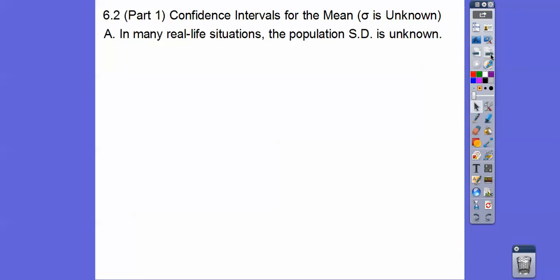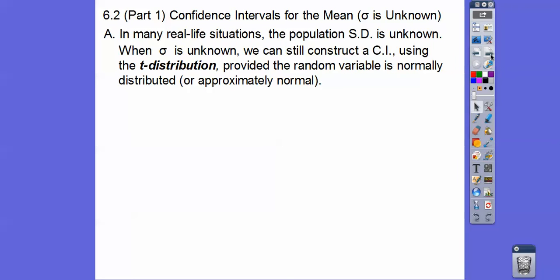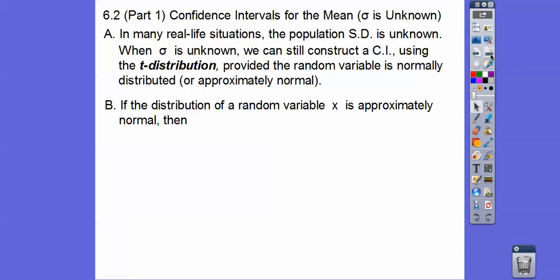In many real-life situations, the population standard deviation is unknown. When it is unknown, we can still construct a confidence interval using the t-distribution, provided that the random variable is normally distributed or approximately normally distributed. If the distribution of a random variable x is approximately normal, then the t-score is equal to the sample mean minus the population mean, divided by the sample standard deviation over the square root of the sample size n.